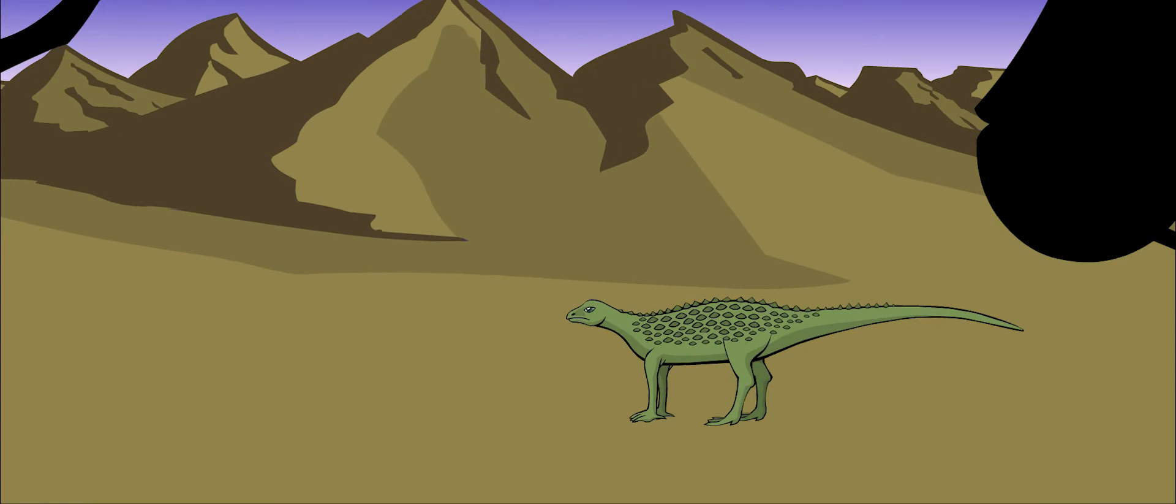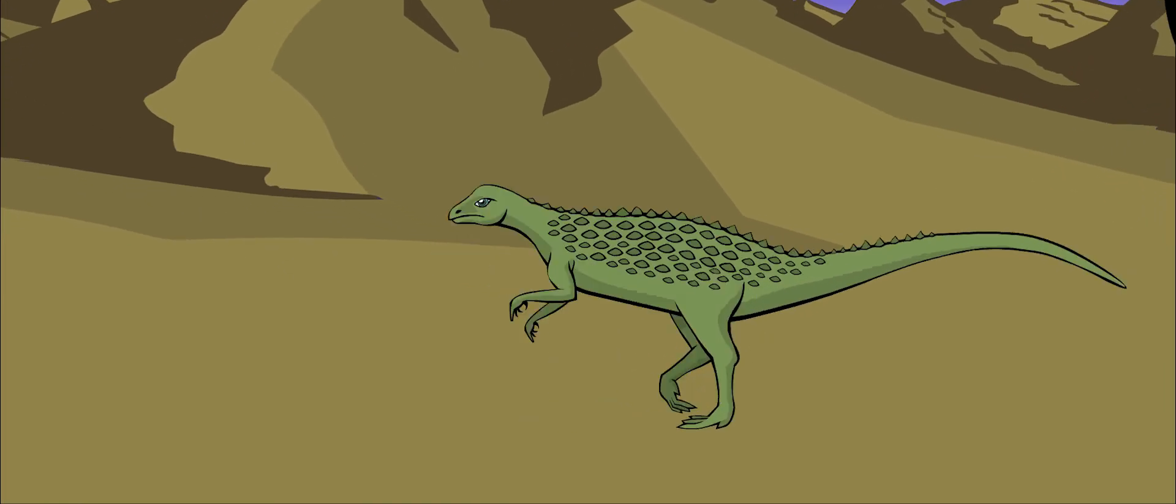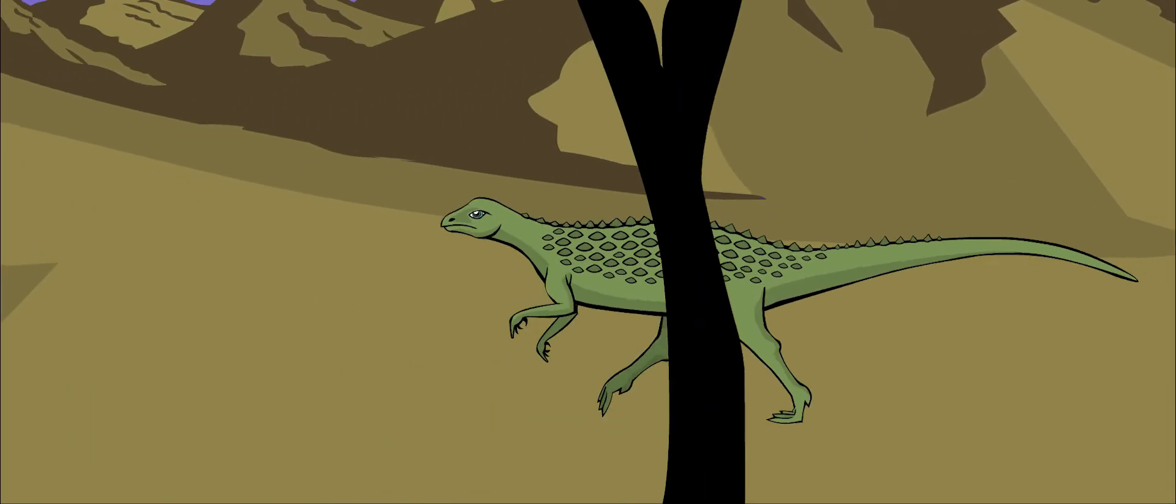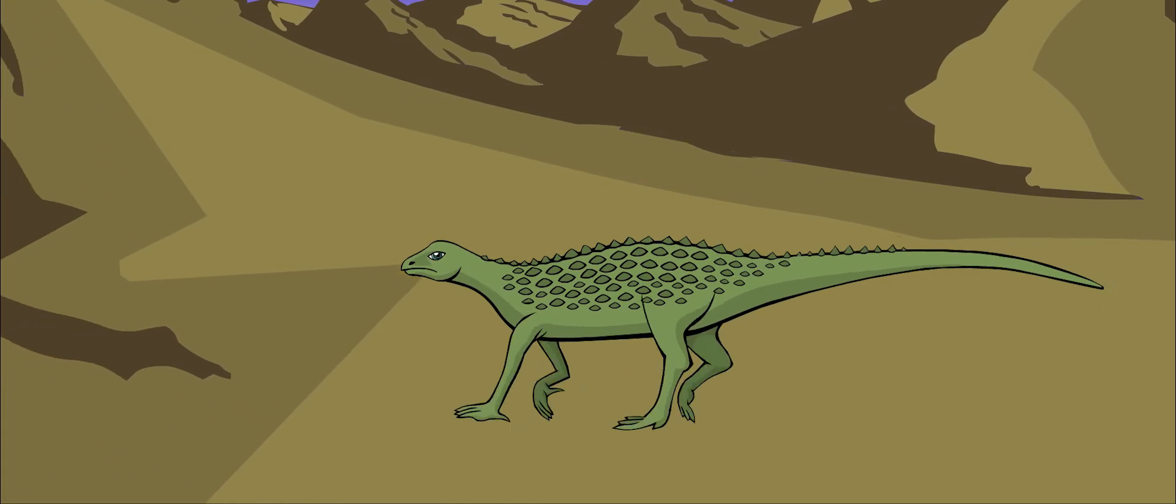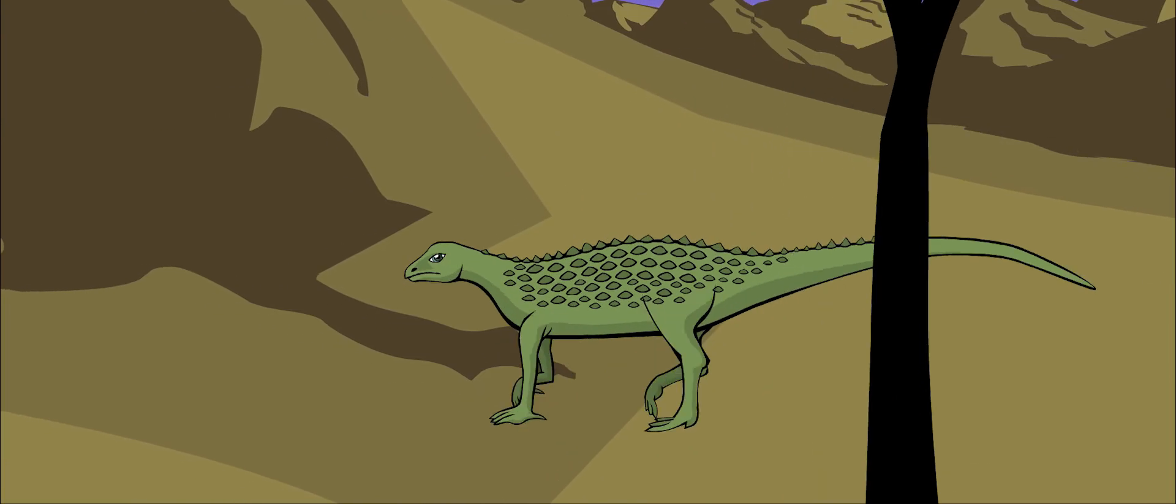Its thin hind legs were much longer than its front legs. When it ran, it ran on two legs. It could also walk on four legs, which might have been easier since all that armor was heavy.